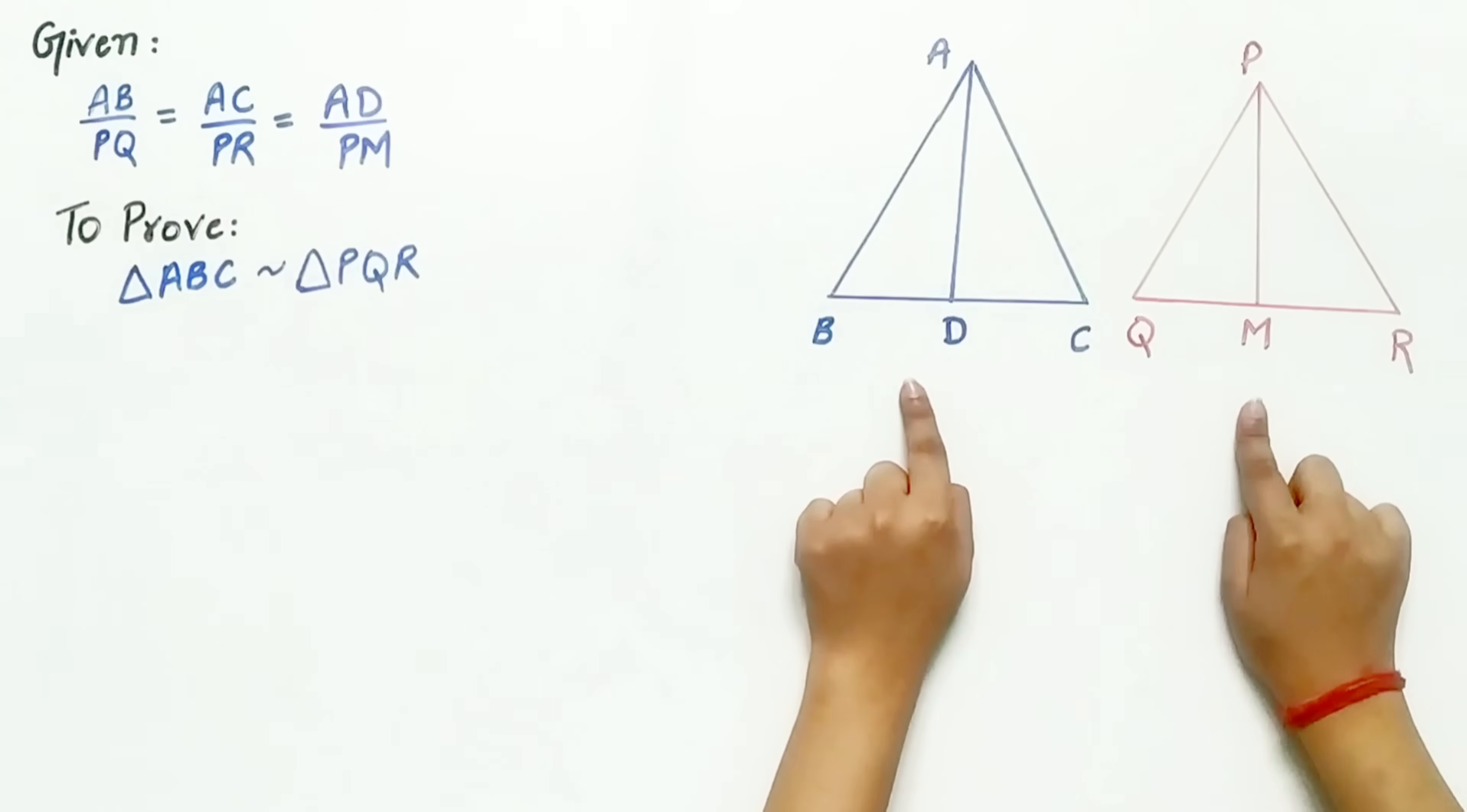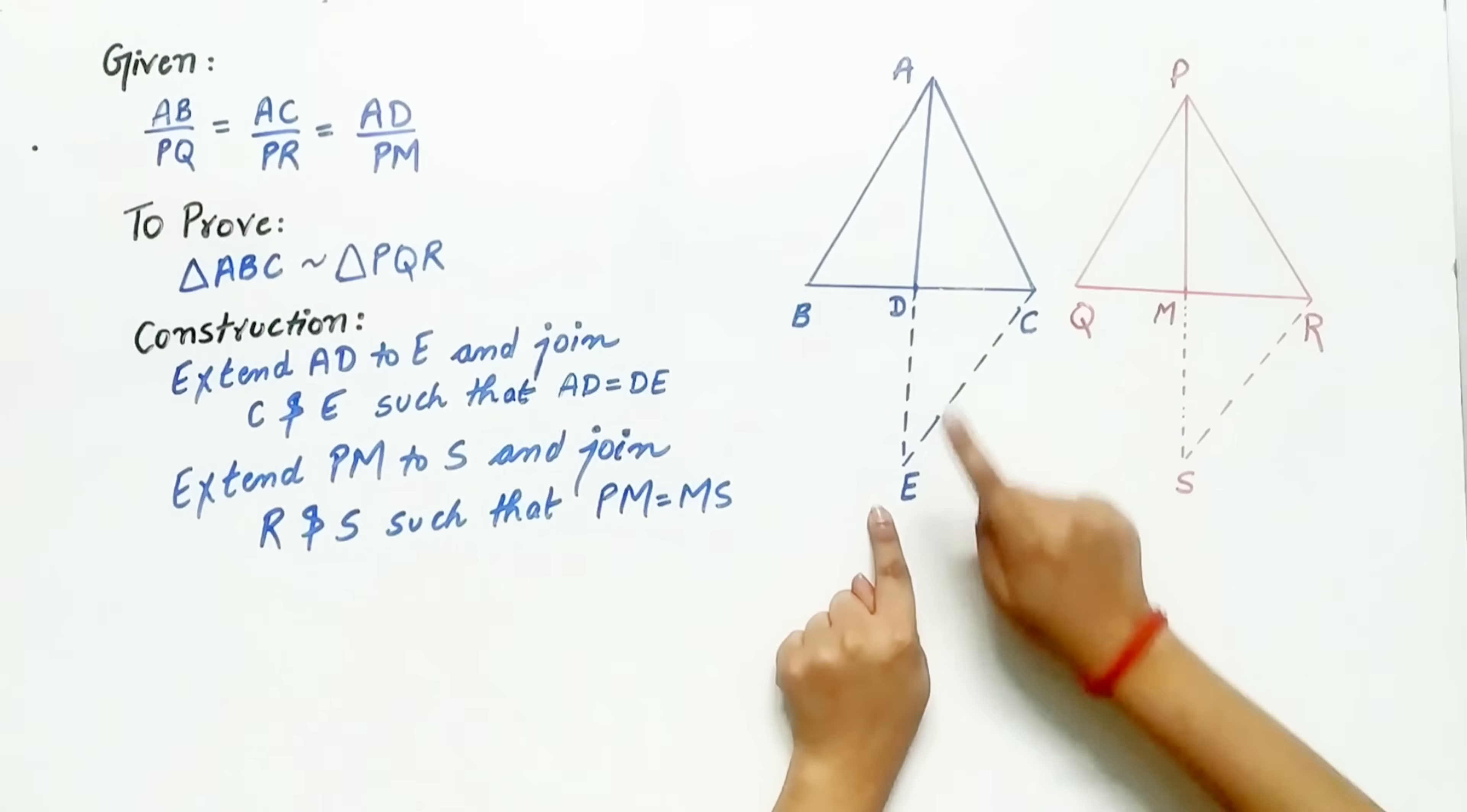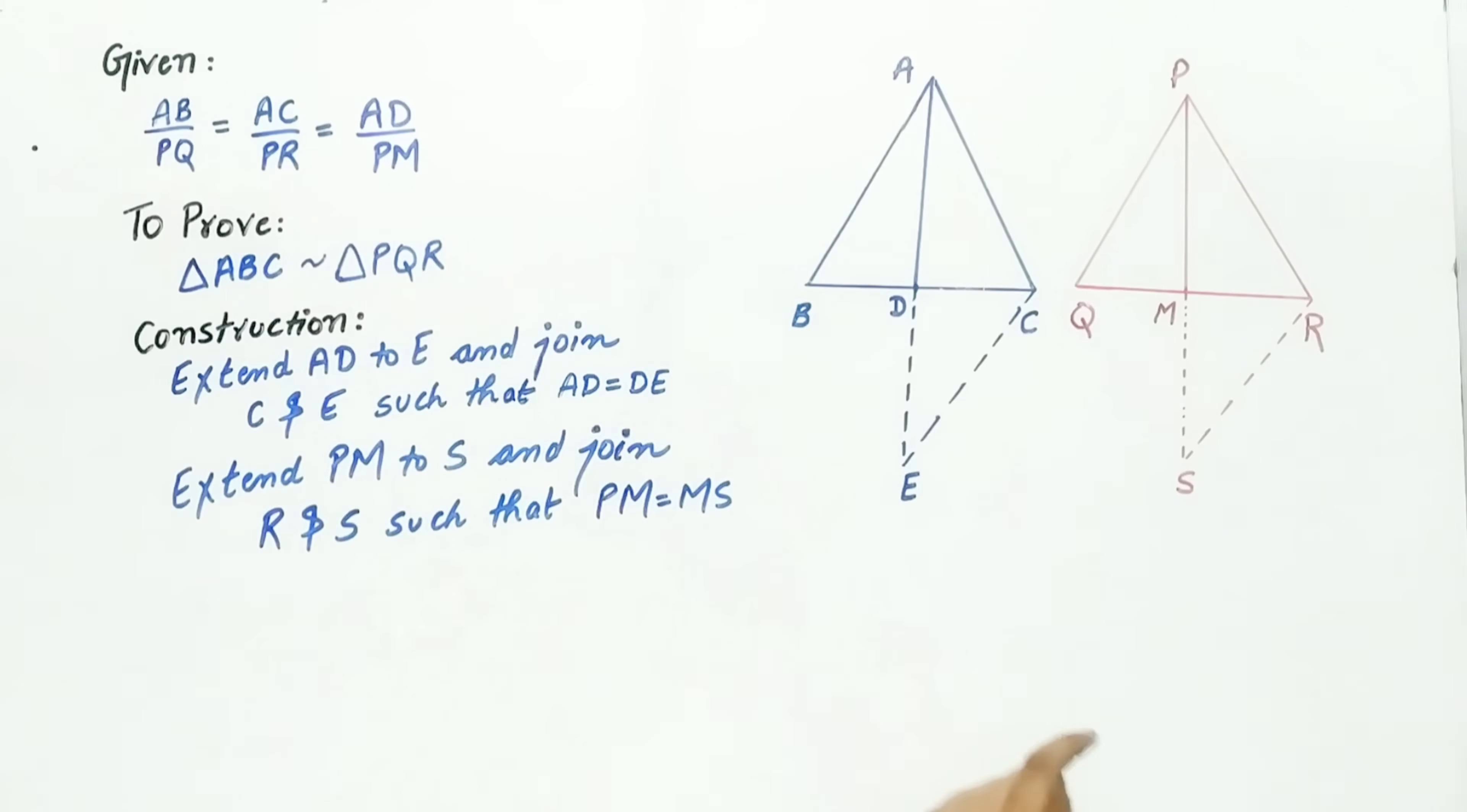Now to prove both the triangles are similar, we have to do construction. Now extend AD to point E and join C and E such that AD is equal to DE.